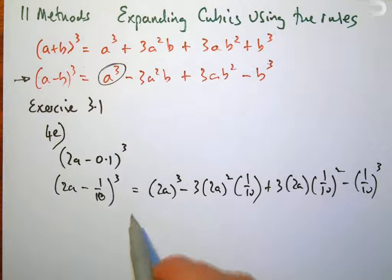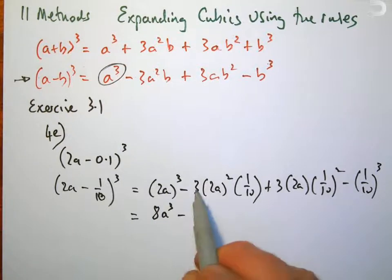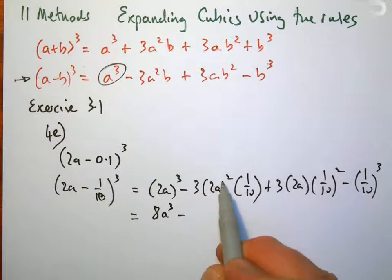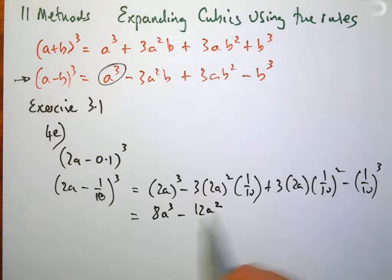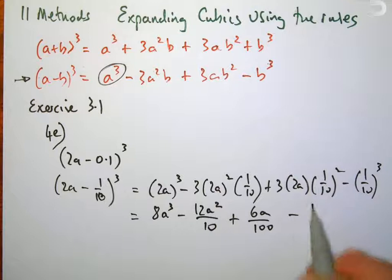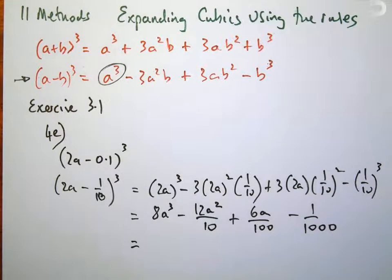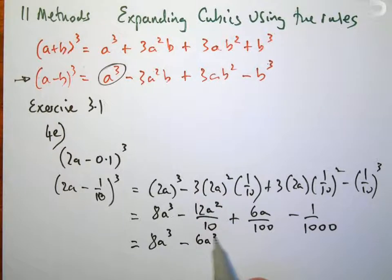Which will equal 8a³ - 3 times 4 is 12, 12a²/10 + 3 times 2 is 6a/100 - 1/1000, which will simplify to 8a³ - 6a²/5 + 3a/50 - 1/1000.